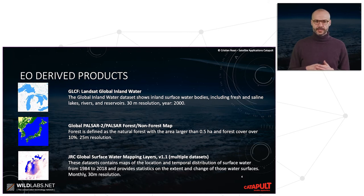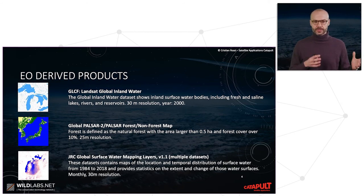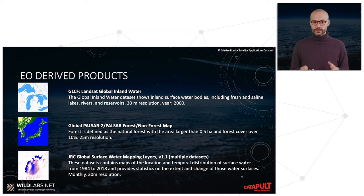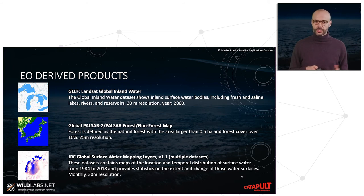For water again, the GSW (Global Surface Water) product provides global surface water mapping layers with the location and temporal distribution of surface water from 1984 to 2018, at monthly 30-meter resolution.